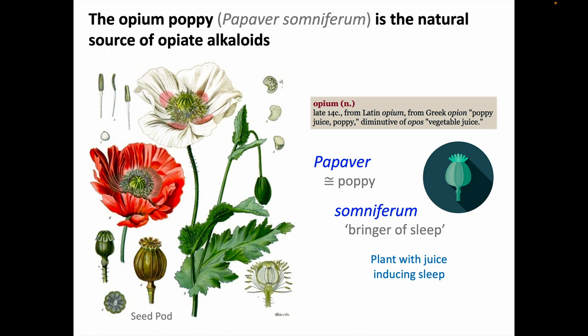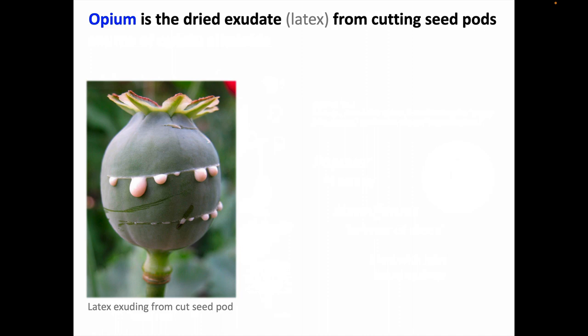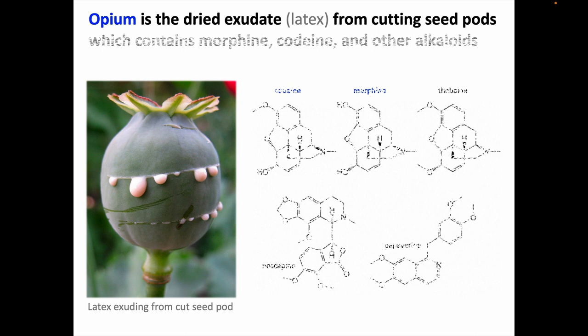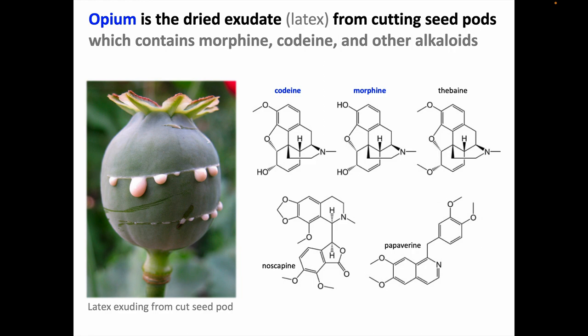And here's that juice. Opium is the dried exudate, or latex, produced when the seed pods are cut into. After the poppy flower is pollinated, the petals will drop off, and this bulbous seed pod develops. The farmer will then go through the field slicing the seed pods, and will come back later to collect the latex after it's had time to dry. This seed pod exudate contains morphine and codeine, with smaller amounts of several other opiate alkaloids.